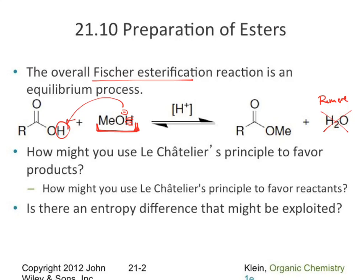The last option comes back to Le Chatelier's principle: we can remove products or add more of one reactant. Typically we add more of the nucleophile or alcohol. It's worth noting that in lab we added more acid — but doubling the alcohol might actually have been more effective. Increasing the concentration of one reagent helps shift equilibrium toward products.